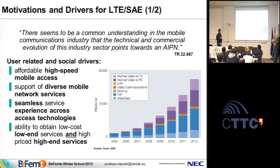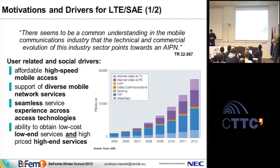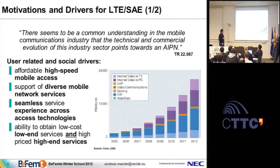What are the main drivers and motivations? There are motivations from both user and business perspectives. This citation is interesting — it's basically from the start of LTE, defined in technical report 22.987, a report on feasibility of long-term evolution. There was a common understanding in the mobile communications industry that the evolution points toward an AIPN — an All-IP Network. An all-IP network implies that all internet applications will be transported on top of cellular networks. Typical user drivers include high-speed mobile access, diverse mobile network services, and seamless service experience across access technologies.